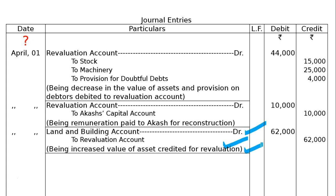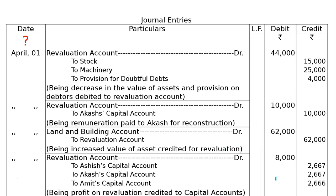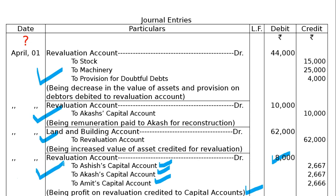Fourth journal entry: profit on Revaluation account is transferred — Revaluation account debited to partners' capital accounts — Akash's, Asis's, Akash's, and Amit's capital accounts — in old ratio, being profit on revaluation credited to capital accounts. You should write 'in old ratio' in the narration. So these 4 entries are completed.